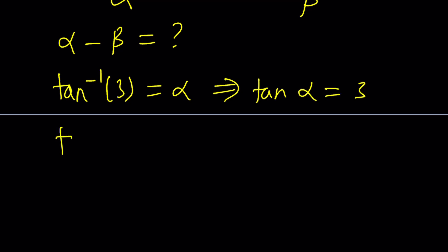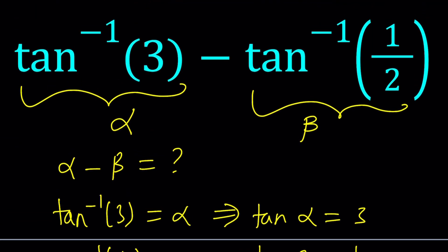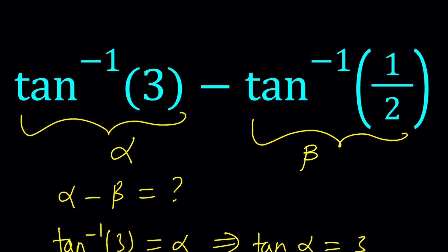And tan inverse of 1 half is beta, which means tangent beta is 1 half. So in other words, we have two angles whose tangents are given, and we're supposed to find their difference. How many solutions are there going to be? Is the answer unique? If you think about this carefully, this is actually a numerical value, right? So let's see what happens.